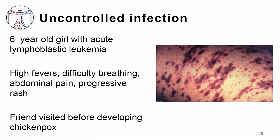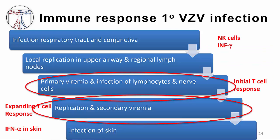Jessica is a six-year-old girl with acute lymphoblastic leukemia receiving treatment for about four months. She came to the emergency room with fevers to 40 degrees centigrade, increasing difficulty breathing, right-sided abdominal pain, and a rapidly spreading rash. A friend had visited 10 days prior right before developing chickenpox, but Jessica had been immunized so her family didn't think she would get sick. If T cells are not working or are absent, as in a patient with cancer, the virus can replicate and spread to other organs, causing hepatitis and liver failure, pneumonia, and encephalitis.